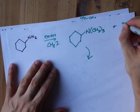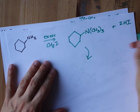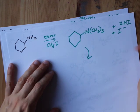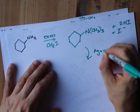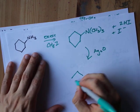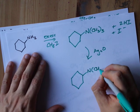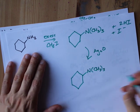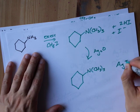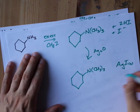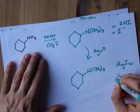We end up with, I guess I should write out my byproducts, like my 2 HI and my I-. When I add Ag2O, it doesn't change what my actual product here is, CH3, but it does mean that I end up with AgI solid and some OH-.